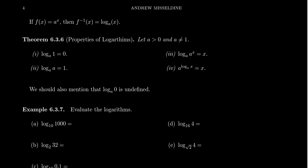Some immediate consequences of those statements: it is a fact that the log base a of 1 is always 0. It doesn't matter what the base is, so long as the base is positive and not equal to 1 — that gives you an acceptable logarithm, and the log of 1 is always equal to 0. We can convert this into exponential form: 1 equals a to the 0. And as we know from exponential rules, if you raise a positive number to 0, you always get back 1.